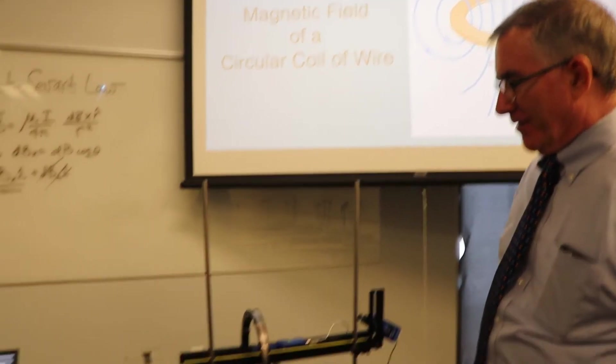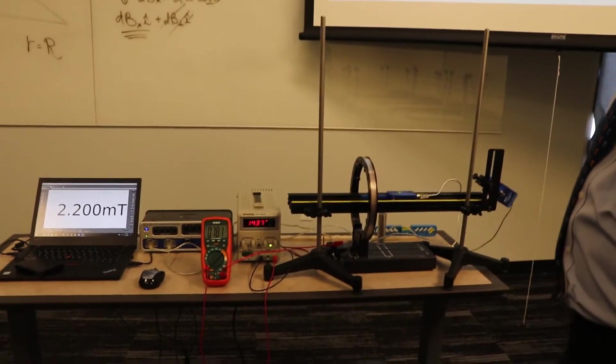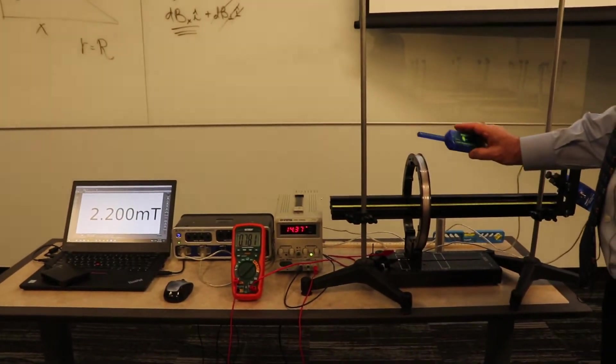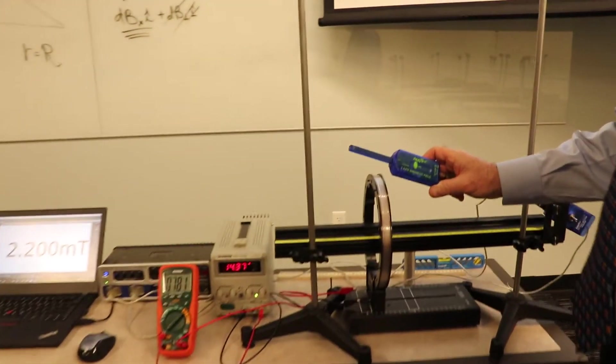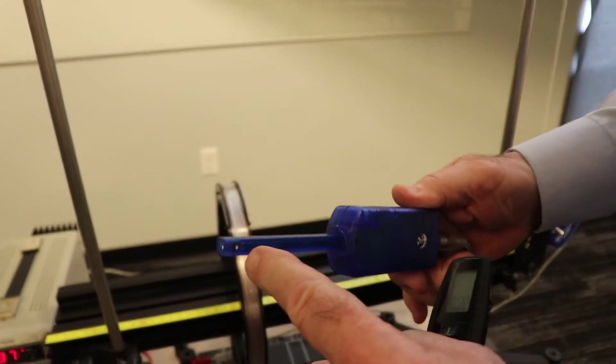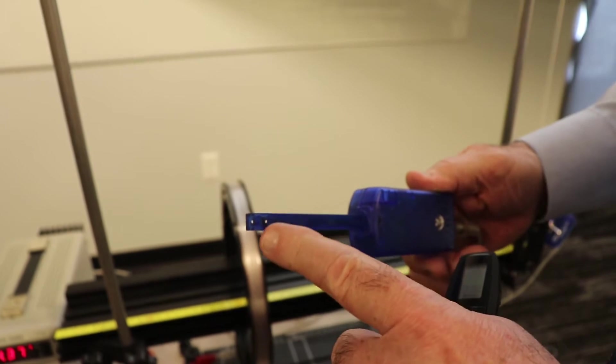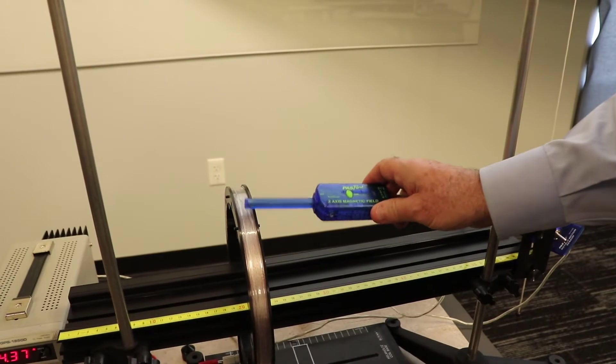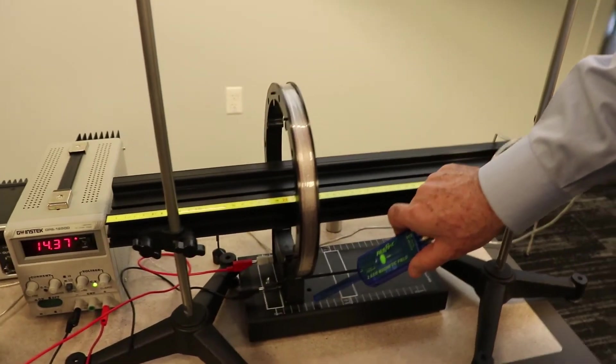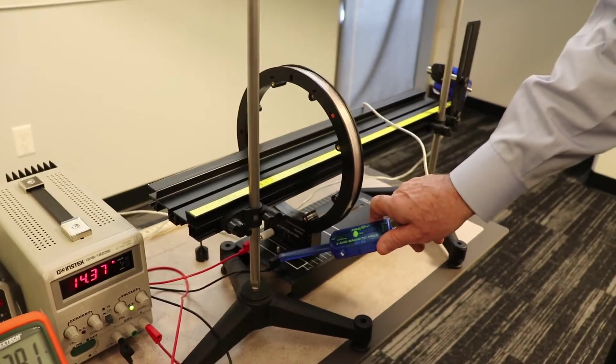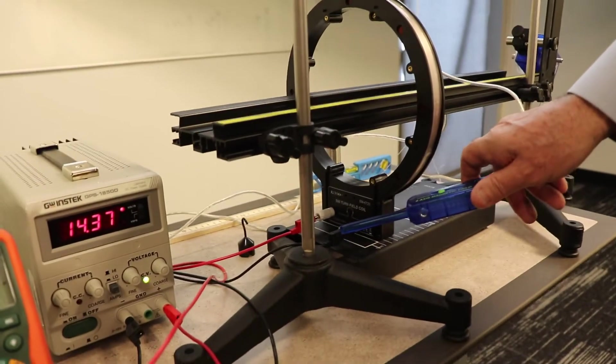This is the setup. We're using Capstone again. This device is called a two-axis magnetic field sensor. It measures the B field at these two white dots - one for the axial direction and one for the perpendicular. We're only interested in the axial B field. Here's our coil of wire on a stand to hold it still, with wires connected for the current.